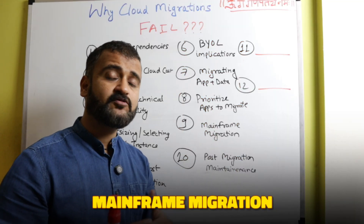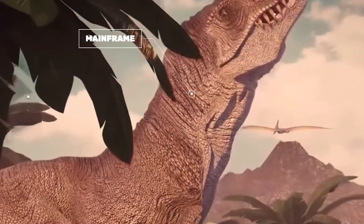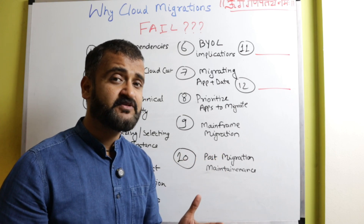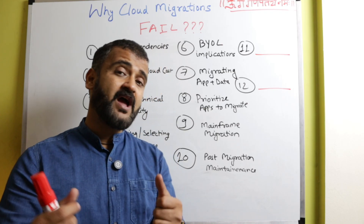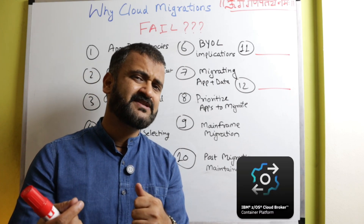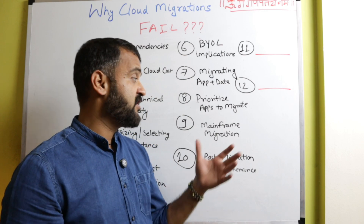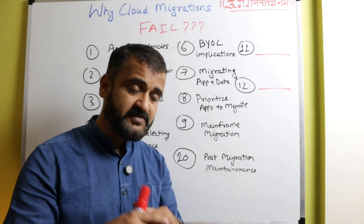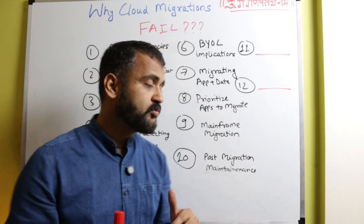The ninth reason is mainframe migration. Mainframe has always been the legacy dinosaur which is still there and has not yet gone extinct in IT. If you have mainframe systems — which most banking industries do — then you have to have very specific solutions, for example IBM ZOS cloud, which specializes in mainframe migration. This is again a giant, and if you have it in plenty, you have to completely strategize your migration keeping mainframe in the picture.